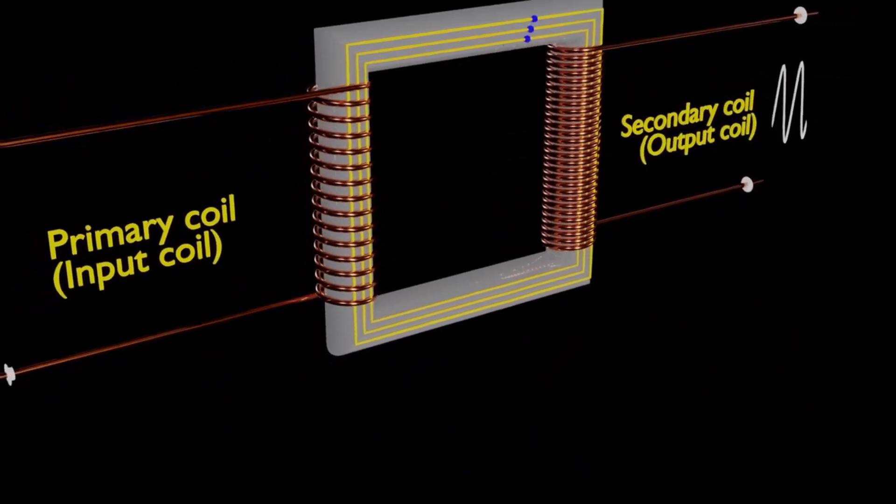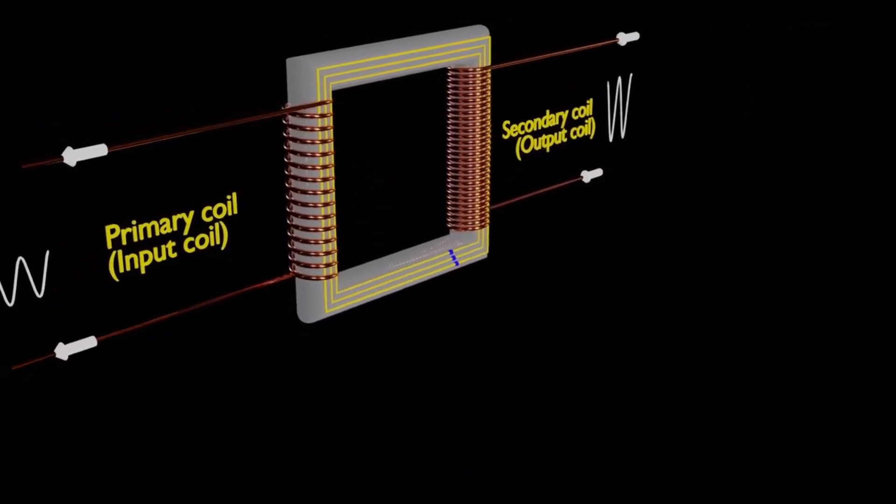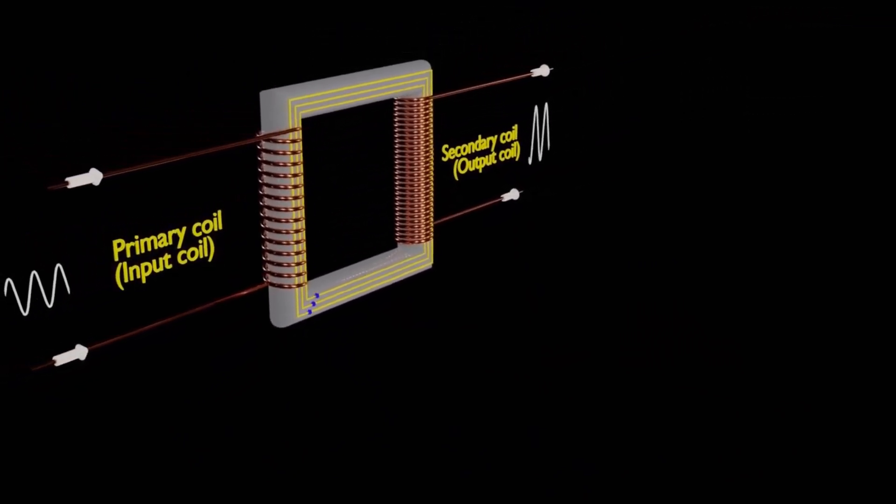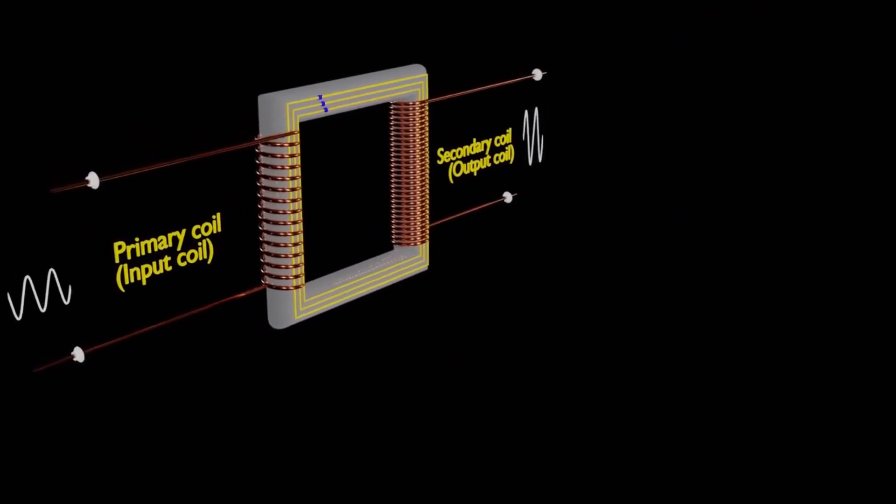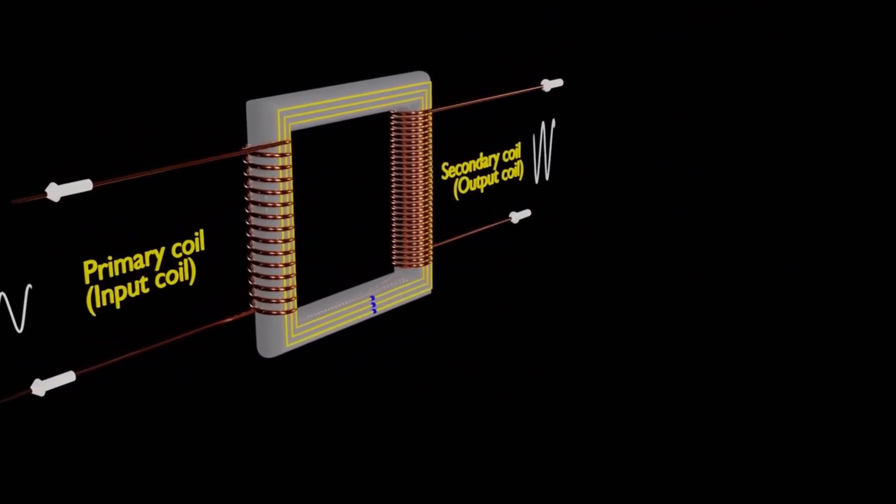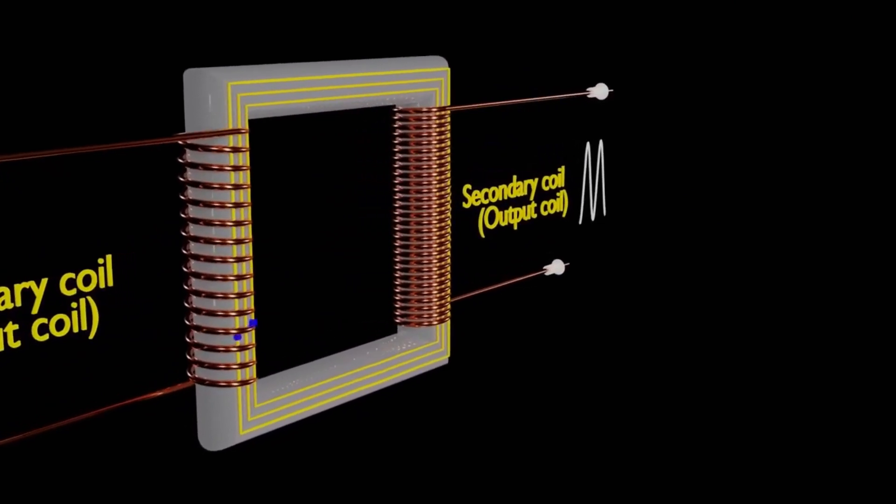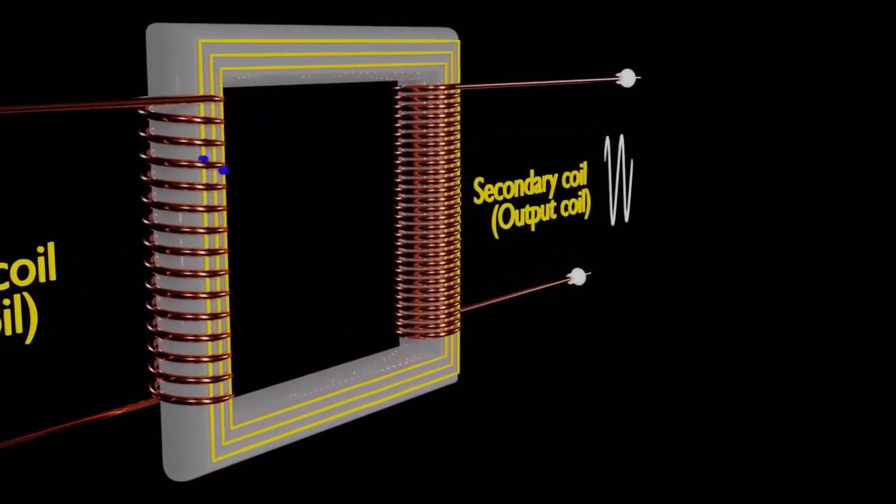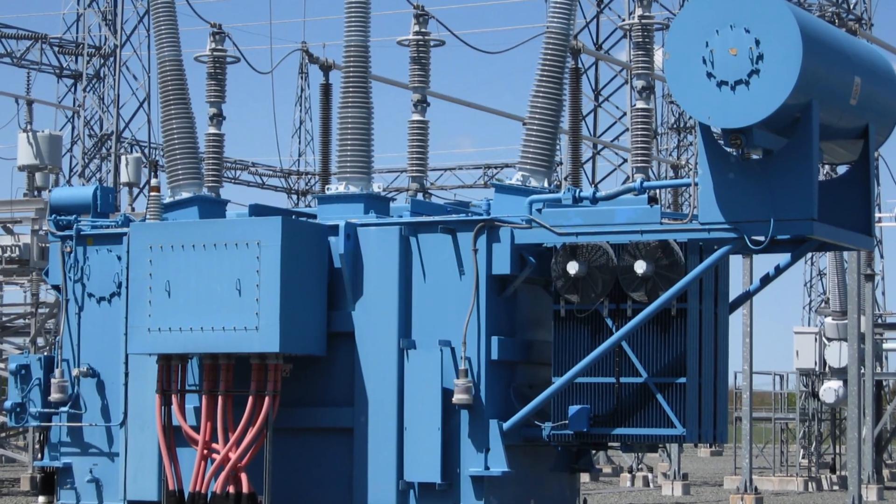At its heart, a transformer consists of two or more coils of wire wrapped around a common core. This core isn't just for show. It's a crucial part of the entire operation, guiding the magnetic field from one coil to the other. Without it, our transformer wouldn't be much of a transformer at all.